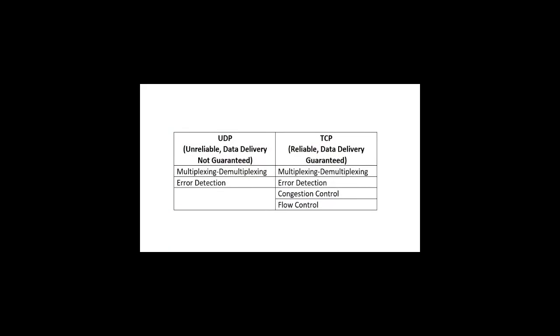Both UDP and TCP perform a specific set of functions. UDP is an unreliable data delivery protocol — it does not provide any guarantee of delivering data to the other side. It provides two and only two functions: multiplexing/demultiplexing and error detection.